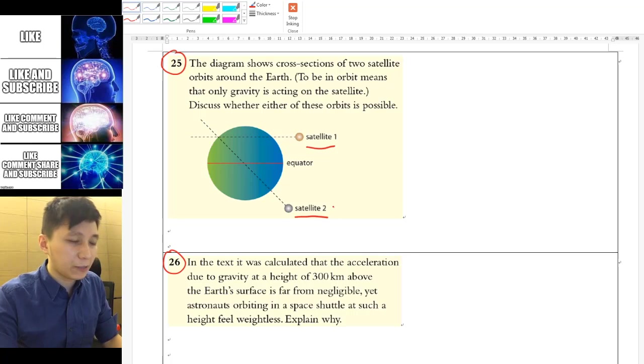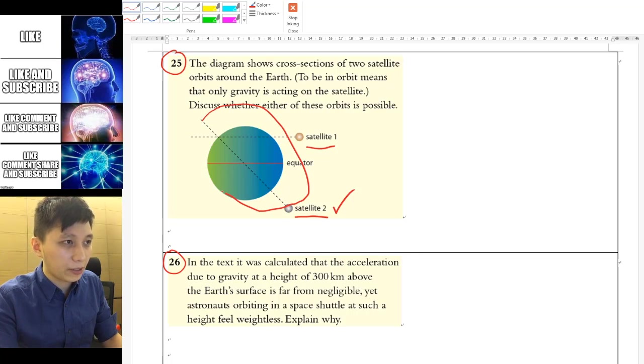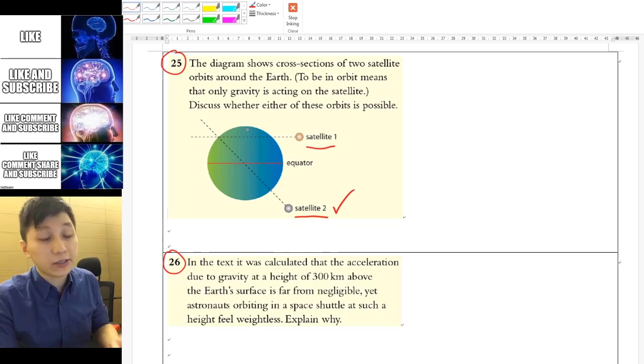So for satellite 2, it's possible because if you try to imagine this is the Earth and this is the circle that's orbiting around, the gravitational force is always constant and pointing towards the center of the Earth.